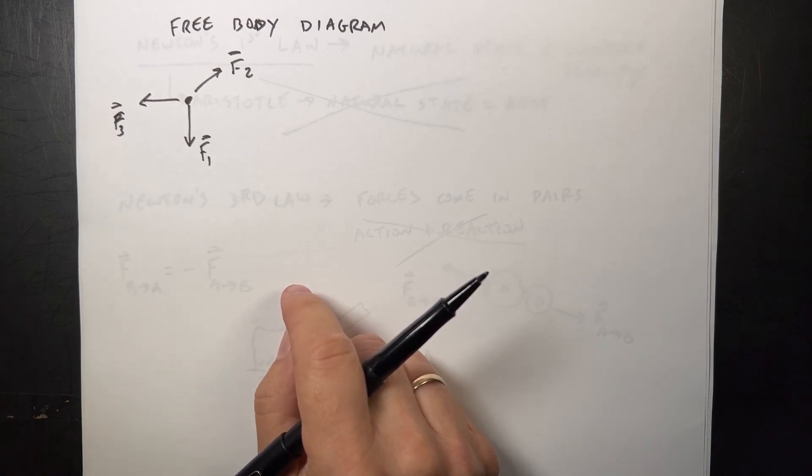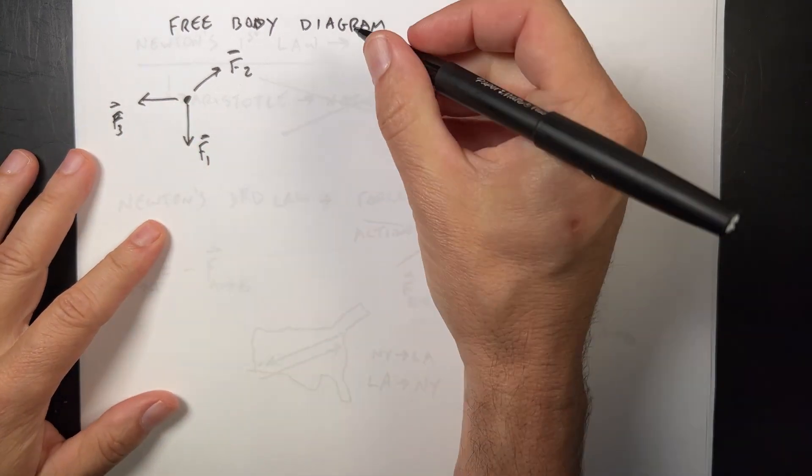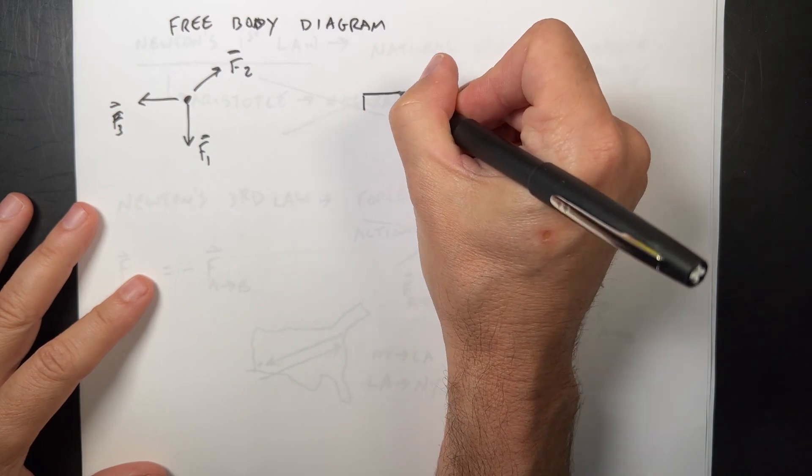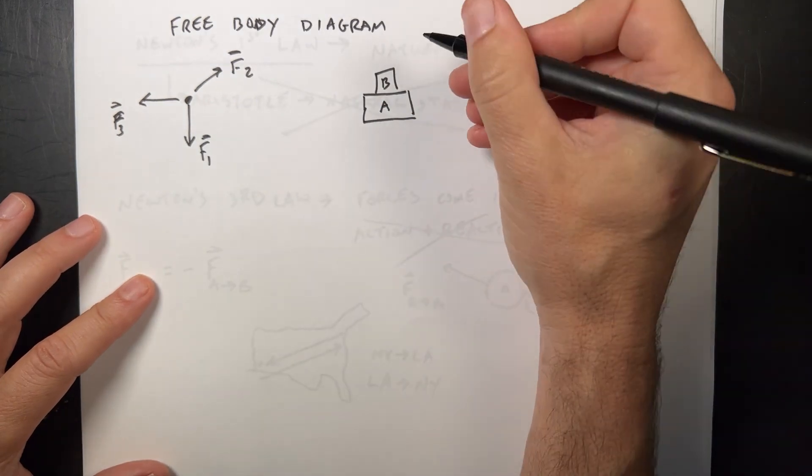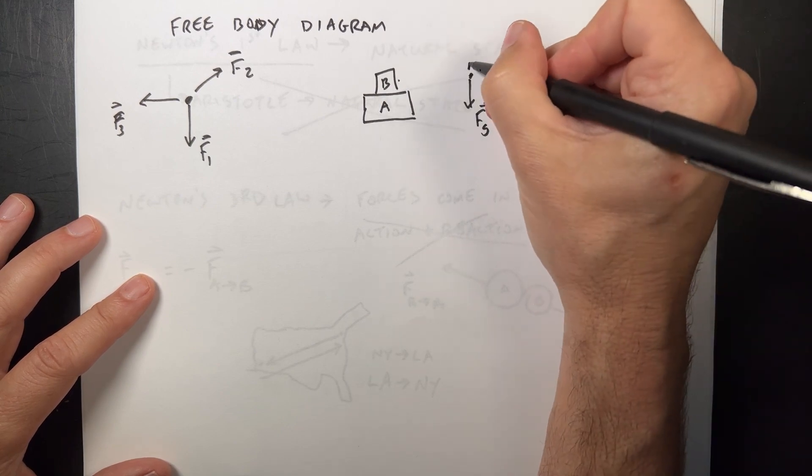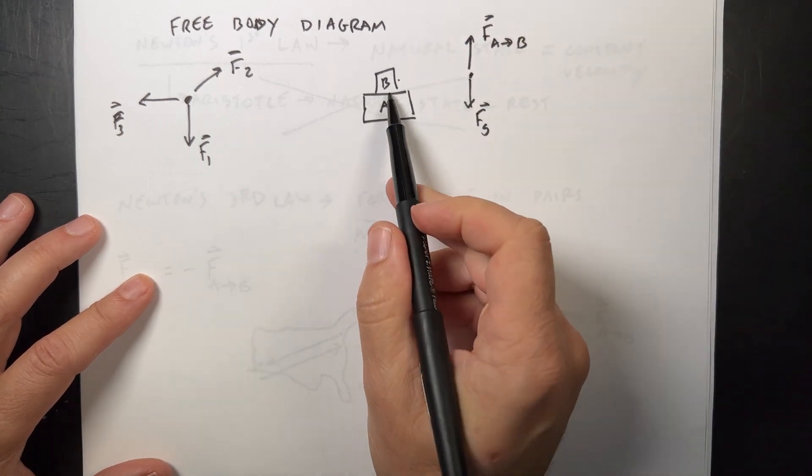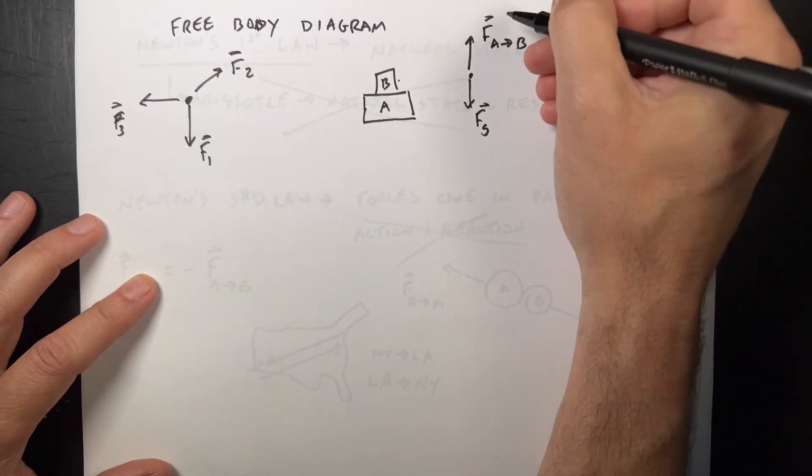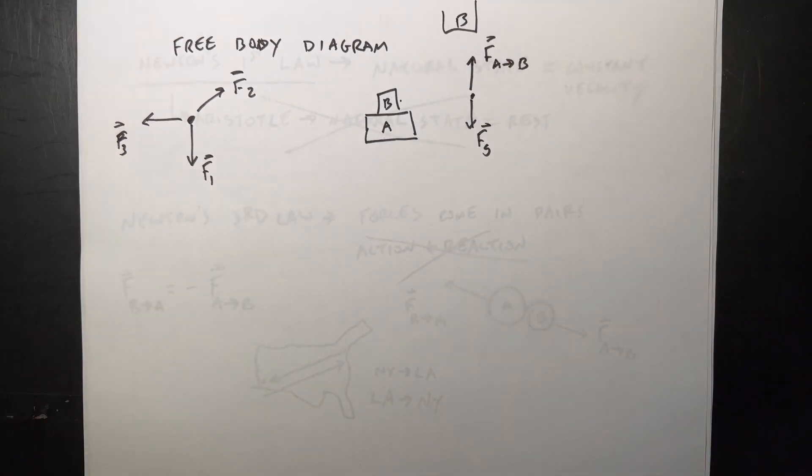You want to be very careful not to put a force that this pushes on something else. The common example is if I have block A and block B sitting on top of it, then for B I can put the gravitational force FG and the force A on B. I don't want to put the force that B pushes on A on the B diagram. This is for B. Be very careful about that - it is a common mistake.